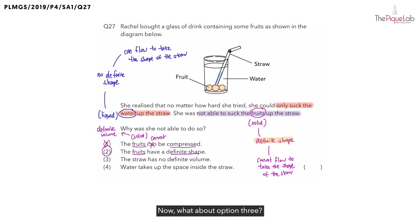Now, what about option three? They said the straw has no definite volume. Now, first of all, the straw, is it a solid, liquid, or gas? Straws are solids. And solids, do they have a definite volume? Definitely. Which means, option three, is this possible? No. So, three is out.